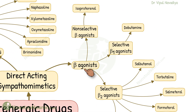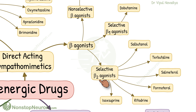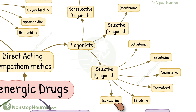Moving to beta-agonists. An example of a non-selective beta-agonist is isoproterenol. Dobutamine is a selective beta-1-agonist. Selective beta-2-agonists are salbutamol, terbutaline, salmeterol, formoterol, ritodrine, isoxsuprine, etc.